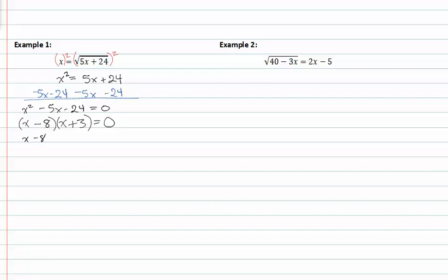Setting my factors equal to zero, I get (x - 8) = 0 and (x + 3) = 0. At this point solving for x, I get x = 8 and x = -3. Now I have to check for extraneous solutions or solutions that don't make this equation true.